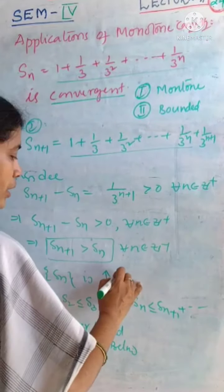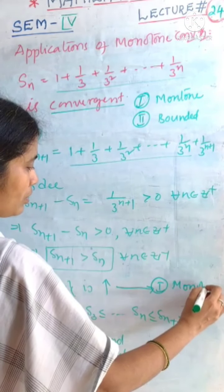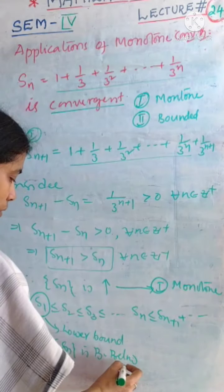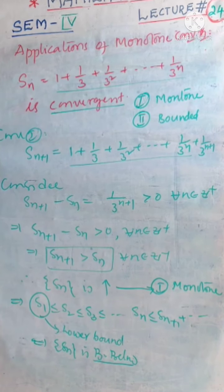Once we conclude that it is an increasing sequence, then it is a monotone sequence. And one more condition: we observe here it is a bounded below sequence.